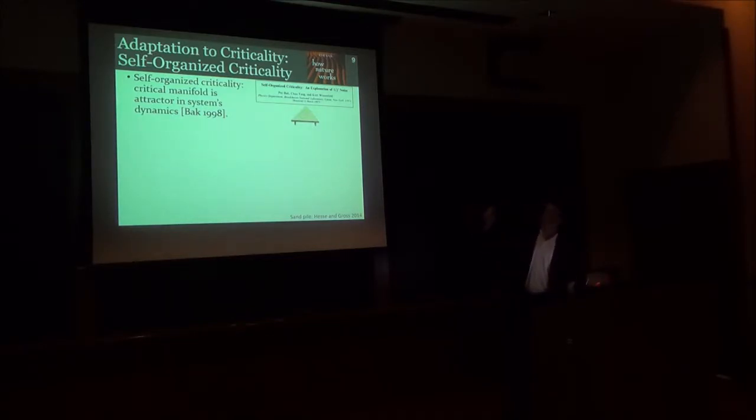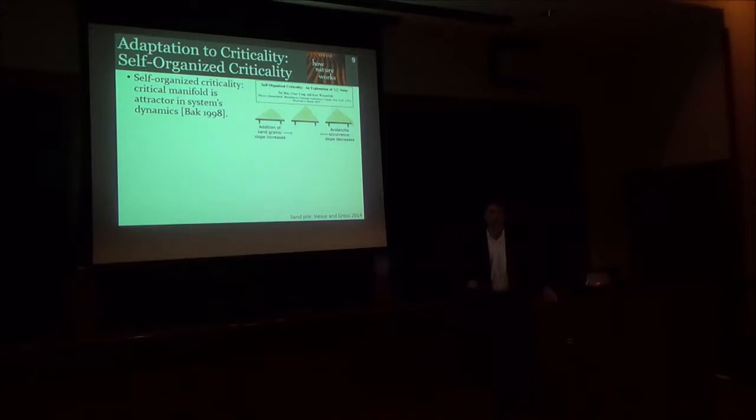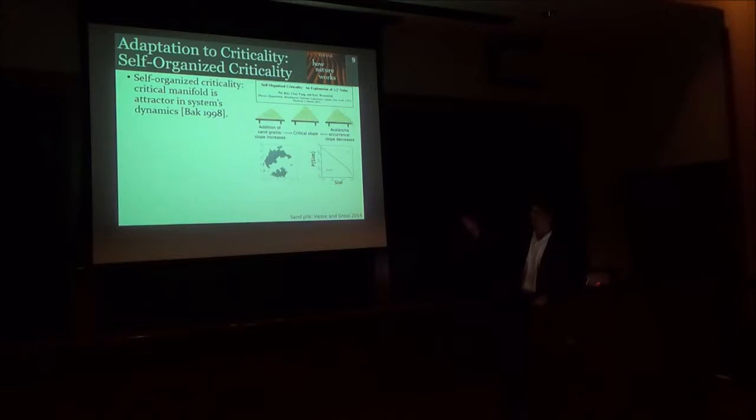One potential explanation that was championed by Per Bak is the idea of self-organized criticality, which is that the critical manifold, which I described earlier, is actually an attractor in the system's dynamics. So the system drives itself naturally and spontaneously to the critical point. The canonical example of self-organized criticality is the sand pile model. Imagine you have a sand pile to which you're adding grains of sand. If the sand pile is too shallow and you're adding grains of sand, the sand pile will become steeper and steeper. But if it becomes too steep, adding more sand triggers these avalanches that cause the pile to become shallower. And the sand pile eventually stabilizes at a slope which is called the critical slope or angle of repose.